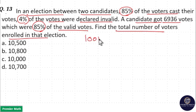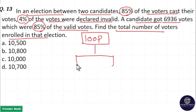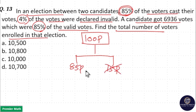Consider 100% as the total number of voters. Out of this 100 parts, only 85% of them voted — that is 85 parts voted and the remaining 15 parts did not vote. Here, 4% of the votes were declared invalid.